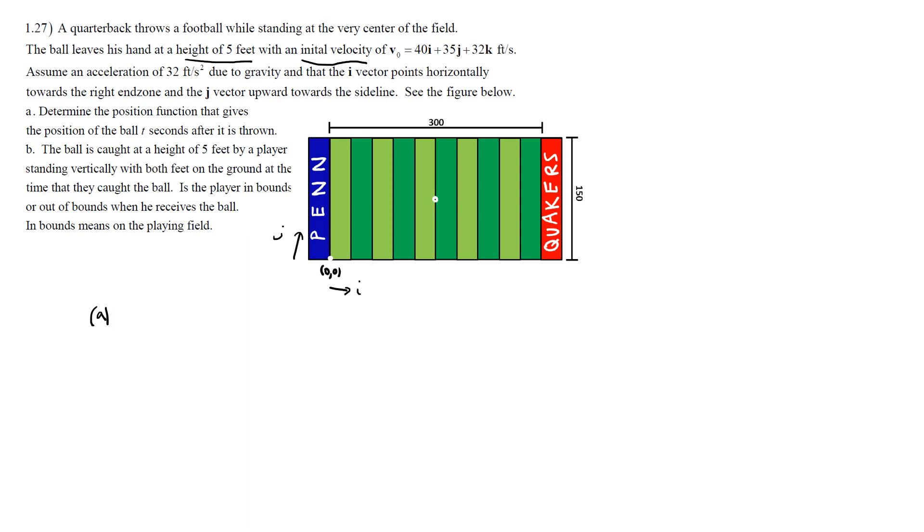So they want us to find what we tend to call R of T, the position function, the space curve position function. The way we're going to get this is by starting with A of T, acceleration, and then integrating to get velocity and then integrating to get position.